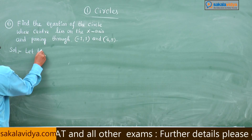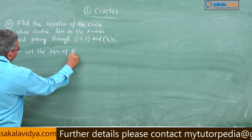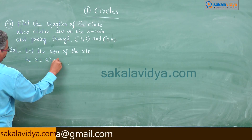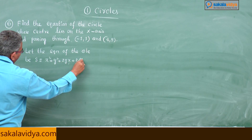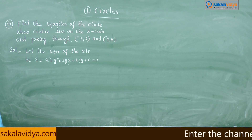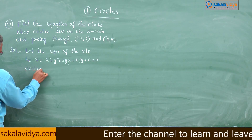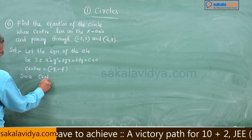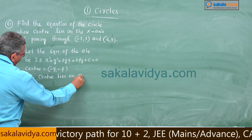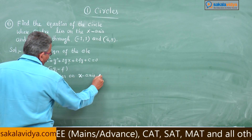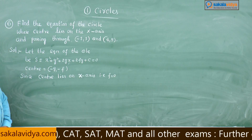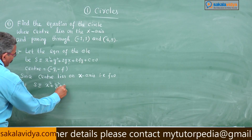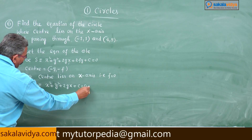Let the equation of the circle be S equals x squared plus y squared plus 2gx plus 2fy plus c equals 0. This is the general form; the center is minus g comma minus f. Since the center lies on the x-axis, f equals 0. So S becomes x squared plus y squared plus 2gx plus c equals 0. Call this equation 1.